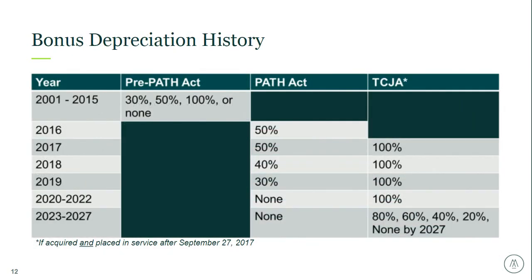Next, I want to talk about bonus depreciation and its history. It was first introduced in 2001. Over a 15-year time period, there were varying levels: 30%, 50%, 100%, and in some cases none at all. The PATH Act of 2015 brought changes that would have bonus depreciation at 50% in 2016 and 2017, then phase down and finally phase out in 2020. The current law, the Tax Cuts and Jobs Act (TCJA), provided changes retroactive to qualified property placed in service after September 27, 2017. It not only increased bonus from 50% to 100%, but allowed acquired property to be eligible for bonus. With the TCJA, the bonus percentages phase down by 20% starting in 2023 and completely phase out in 2027. Bottom line: bonus depreciation is a very powerful tool that can really enhance the benefits of a cost segregation study, but it's important to understand which act the asset falls under.